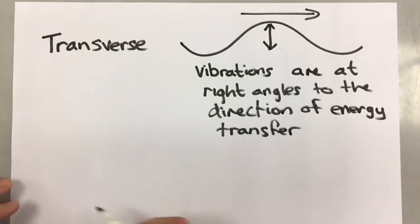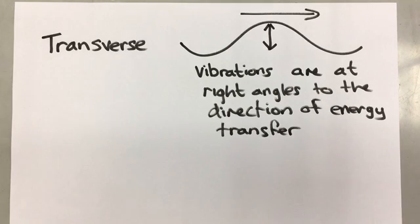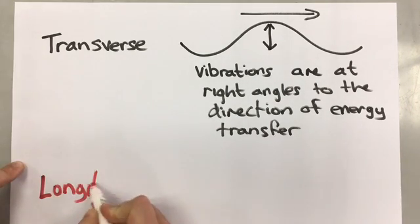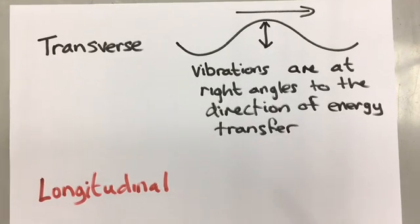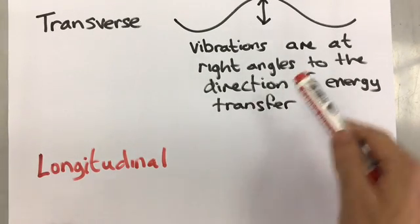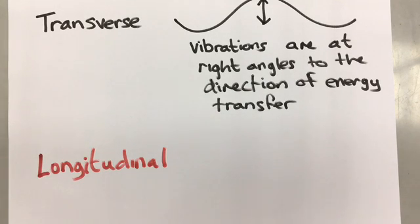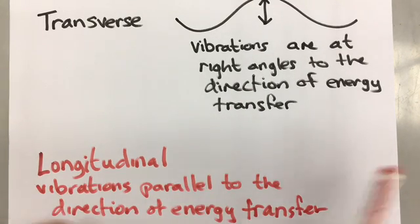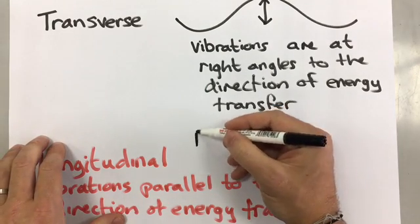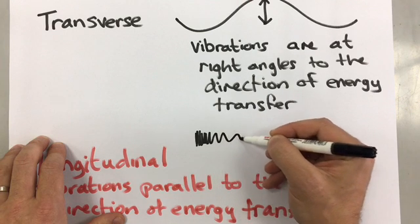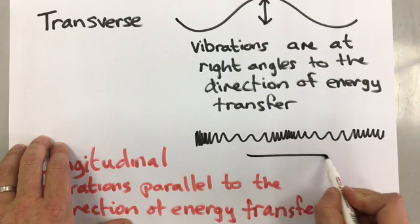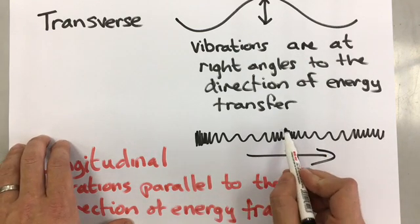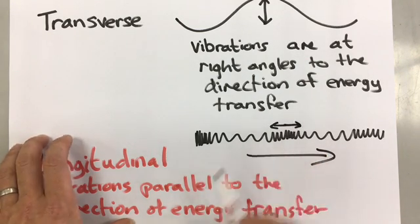The other type of wave is called a longitudinal wave. A longitudinal wave is a little bit harder to draw. But a longitudinal wave, the vibrations are parallel to the direction of energy transfer. Now a longitudinal wave looks something like this. And the wave is still moving this way. But instead, the particles are vibrating forwards and backwards.